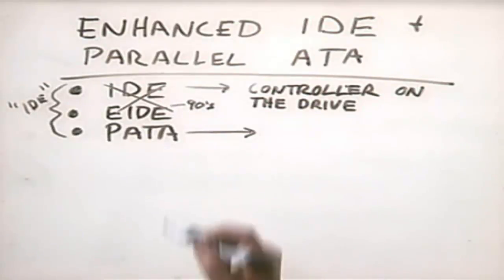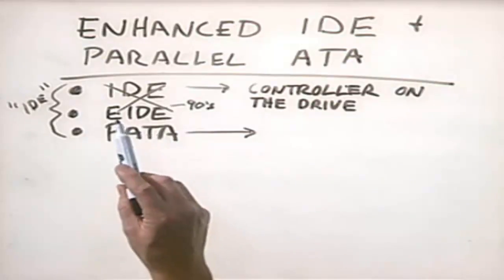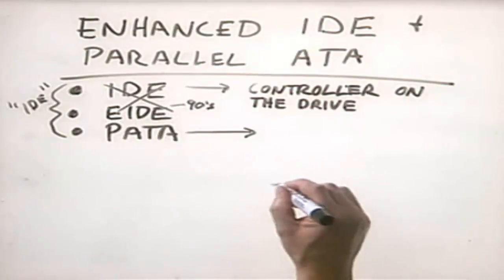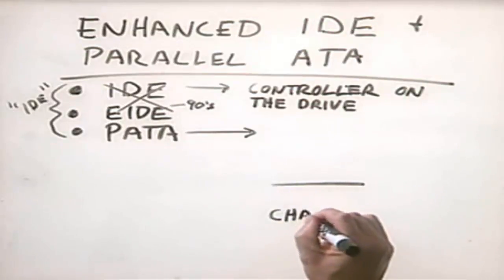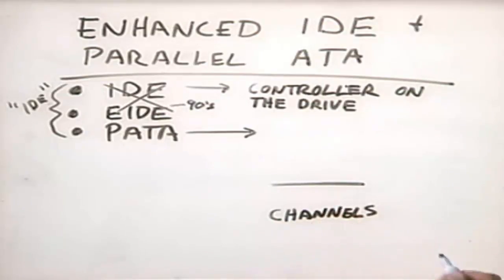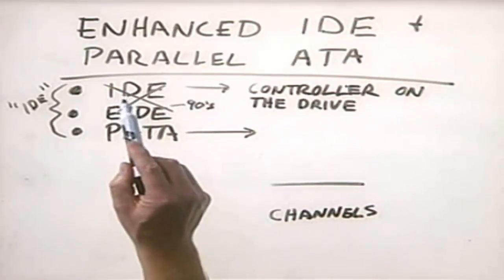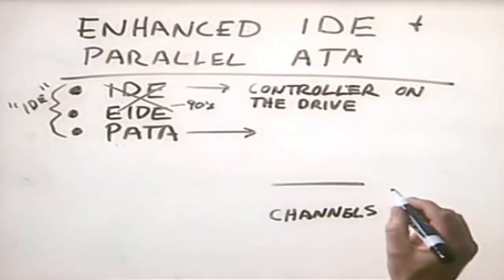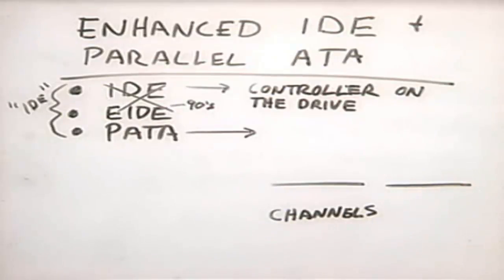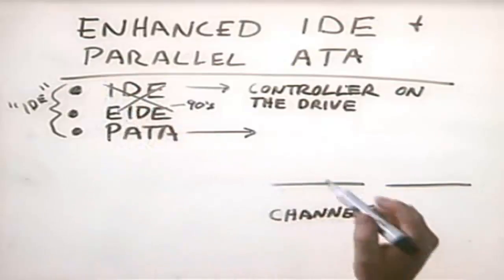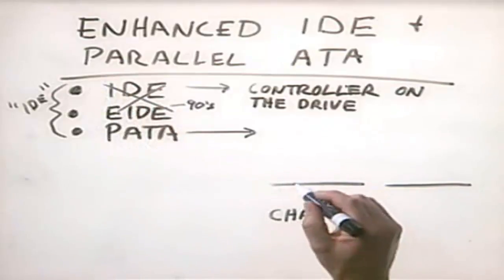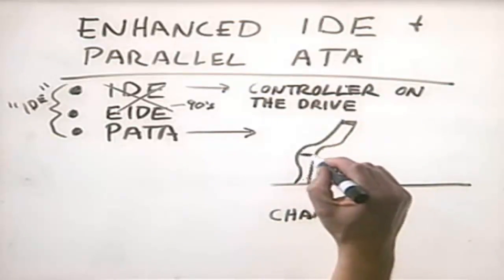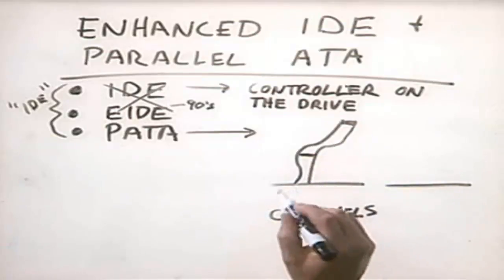Whether you're working with a brand new parallel ATA drive, an older EIDE drive, or an ancient IDE drive, you'll still be dealing with the concept of IDE channels. With an old IDE system you have a single IDE channel. With enhanced IDE or parallel ATA you have two channels. On each channel you can have a maximum of two hard disk drives attached.